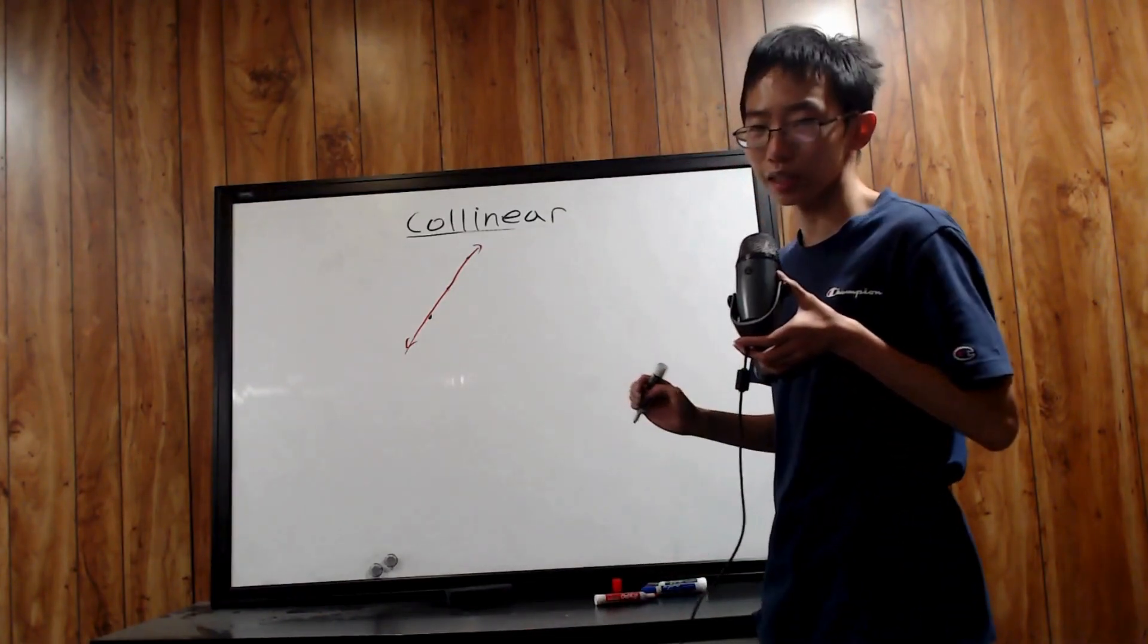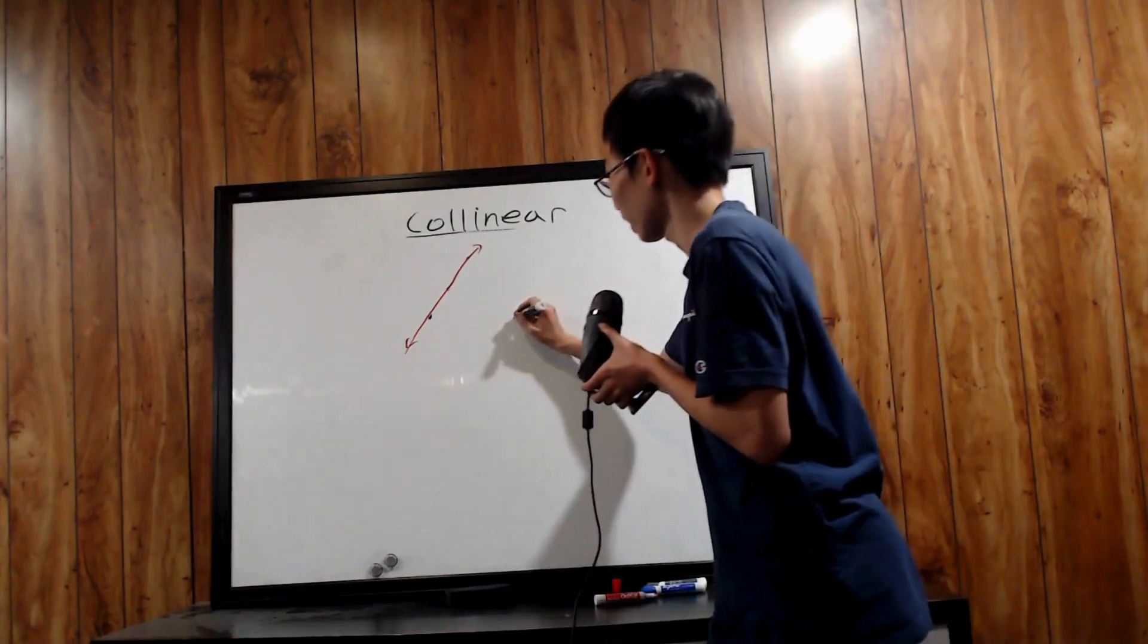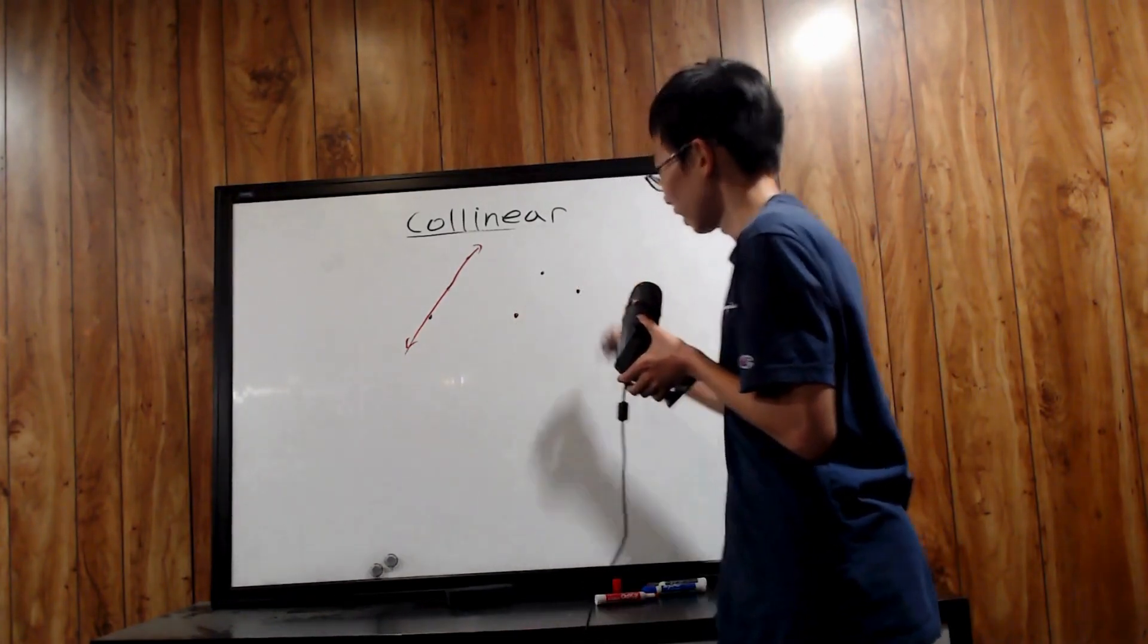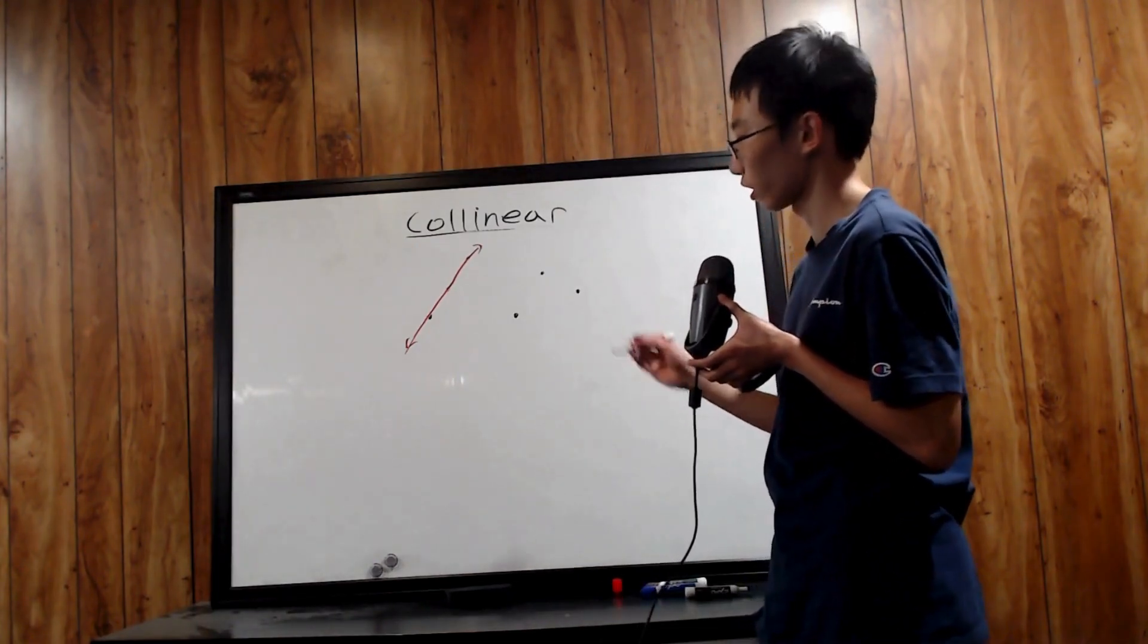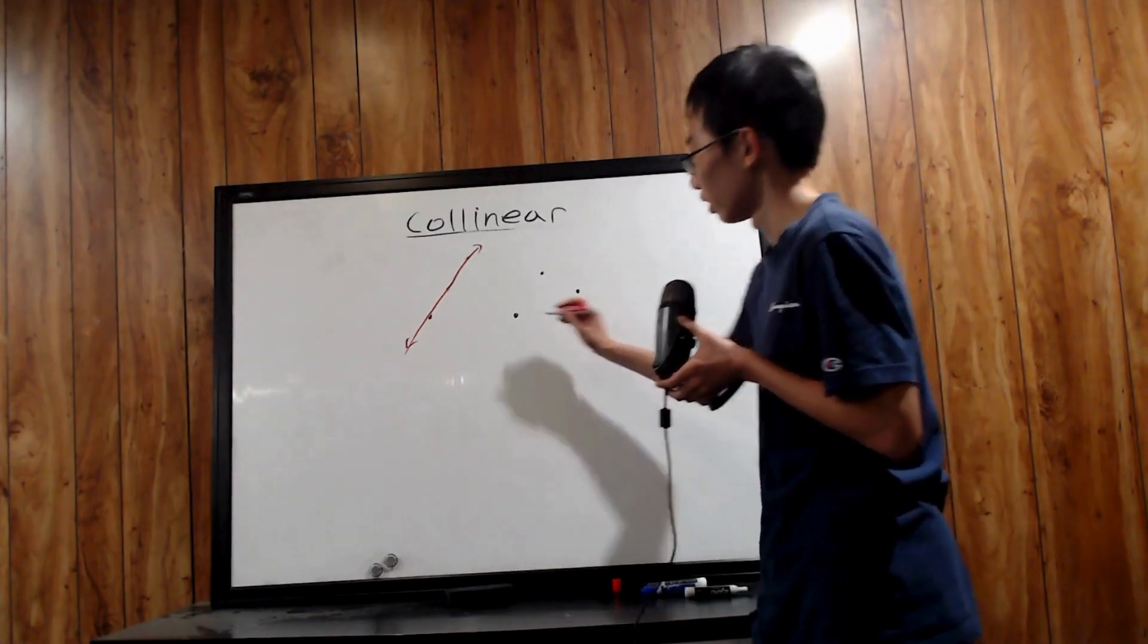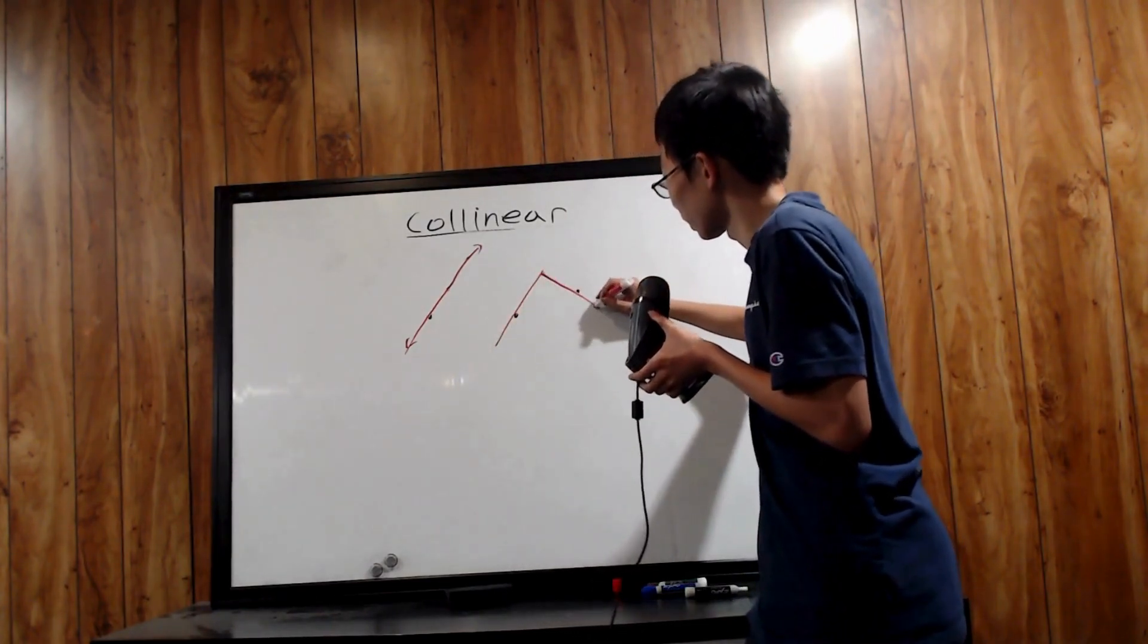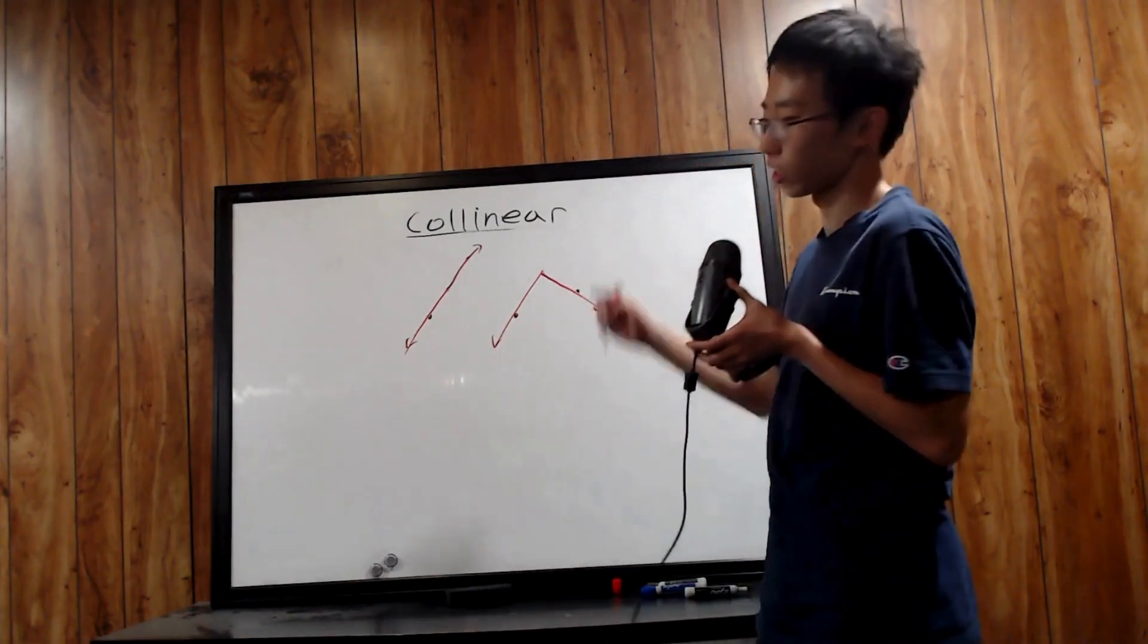Now, you can't guarantee this with all sets of three points. For instance, if I gave you something like this, then this is obviously not collinear. You can't draw a perfectly straight line connecting all three of them. I can't just do this and say it's collinear. This doesn't count.